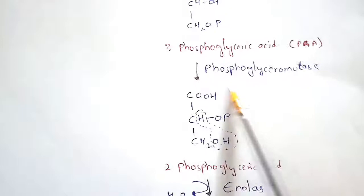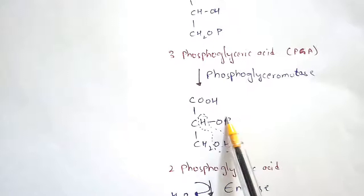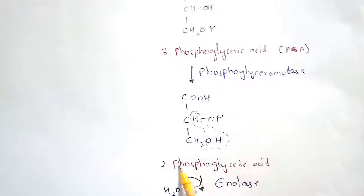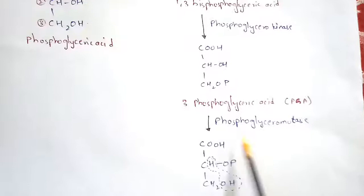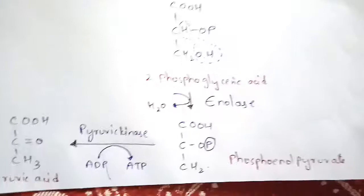3-phosphoglyceric acid will get converted to 2-phosphoglyceric acid by the enzyme phosphoglyceromutase. In 2-phosphoglyceric acid, the phosphate group is present at the second carbon, while the first and third carbons remain as they are. Hence it is named 2-phosphoglyceric acid.